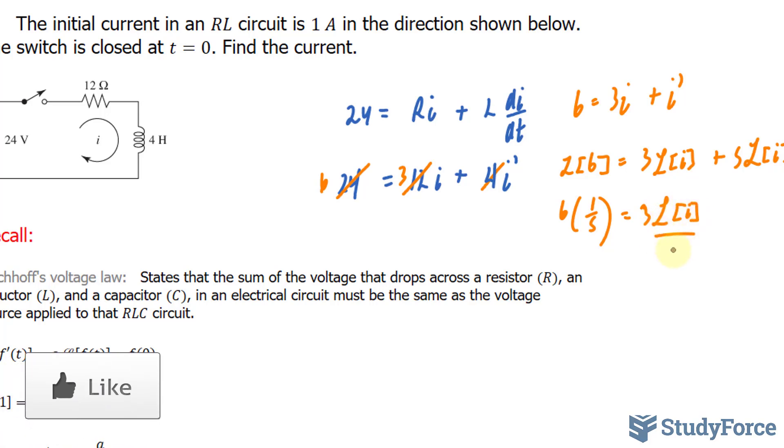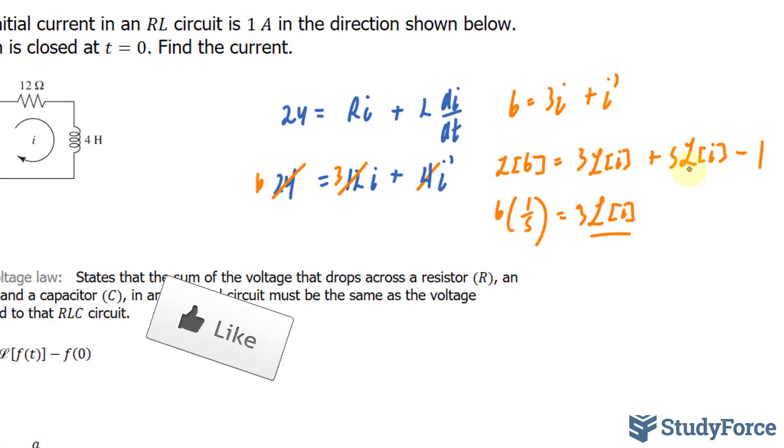My next step is to isolate for this, so I'll leave that the way it is. This term will remain the way it is. I'll factor out the Laplace transform of I next. And I'll take this negative 1 and bring it to the other side in the next step.